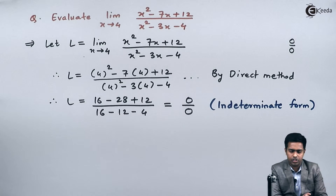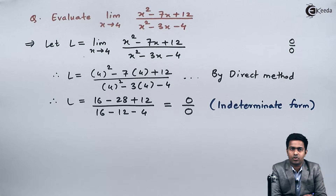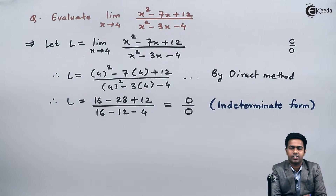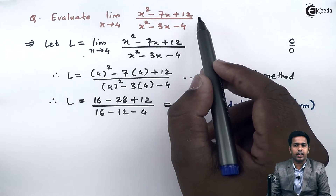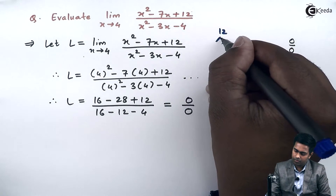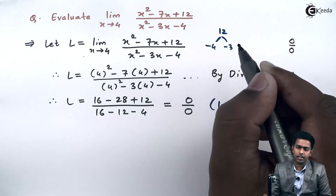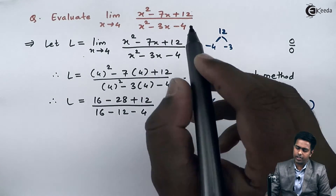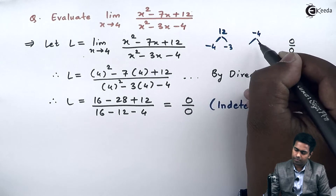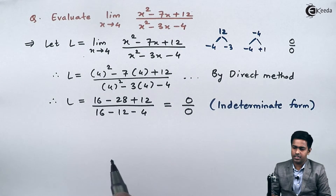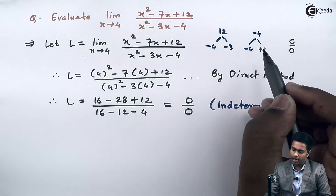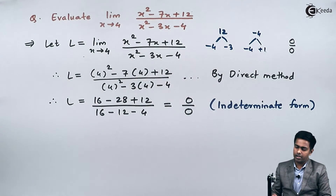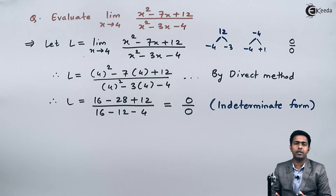If you observe the given question, the numerator is a quadratic equation and so is the denominator. We can find the factors of these quadratic equations. For the numerator, the constant 12 has factors minus 4 and minus 3, since their product is 12 and their sum is minus 7. Similarly, for the denominator's constant minus 4, the factors are minus 4 and plus 1, since their product is minus 4 and their sum is minus 3. So we can get the factors and will apply the method of factorization.